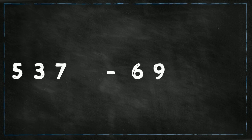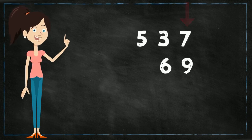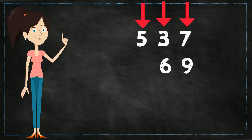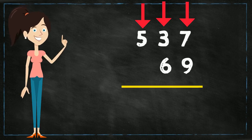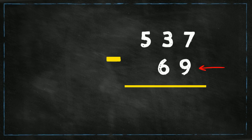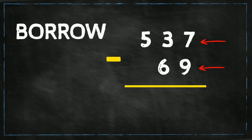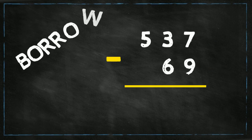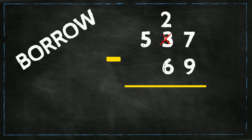Now let's do another subtraction with borrowing: 537 take away 69. We stack the numbers up with ones, tens, and hundreds each in their own column, draw the line underneath, and write a minus sign on the left-hand side. We start with the ones place: 7 take away 9 — another tricky situation where the top number is smaller. We borrow a 1 from the neighboring 3, changing 3 to 2, and that 1 (which is actually a 10) is added to 7 to make 17. So 17 take away 9 equals 8.